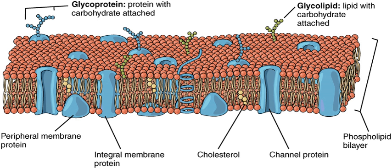The phospholipid bilayer is formed due to the aggregation of membrane lipids in aqueous solutions. Aggregation is caused by the hydrophobic effect, where hydrophobic ends come into contact with each other and are sequestered away from water. This arrangement maximizes hydrogen bonding between hydrophilic heads and water while minimizing unfavorable contact between hydrophobic tails and water. The increase in available hydrogen bonding increases the entropy of the system, creating a spontaneous process.